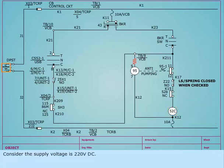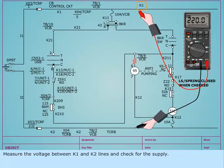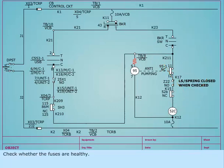Consider the supply voltage is 220V DC. Measure the voltage between K1 and K2 lines and check for the supply. Check whether the fuses are healthy.